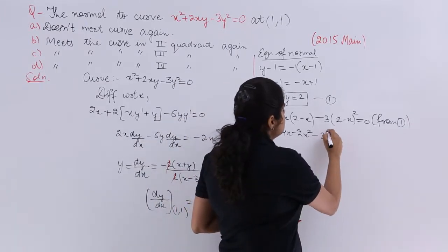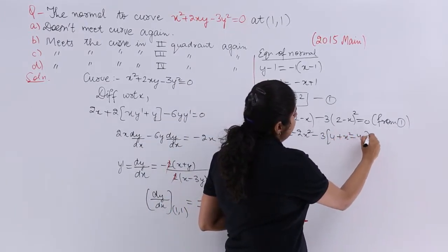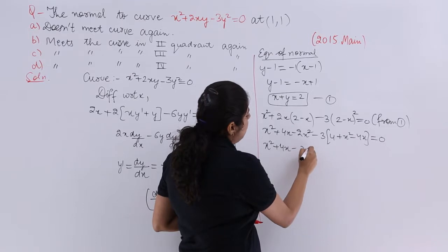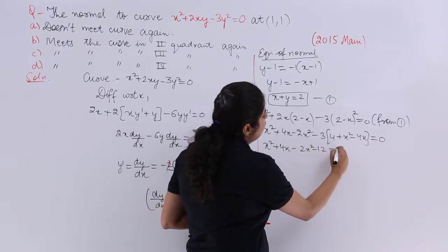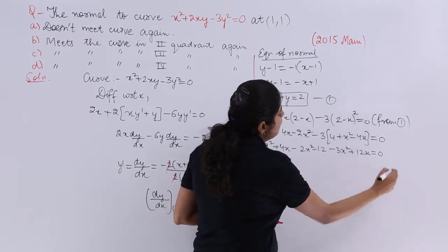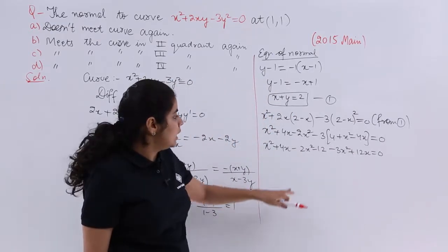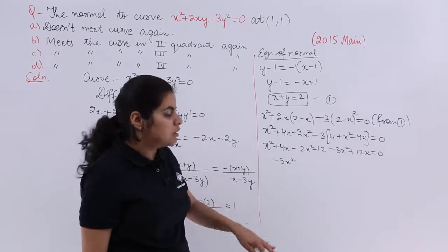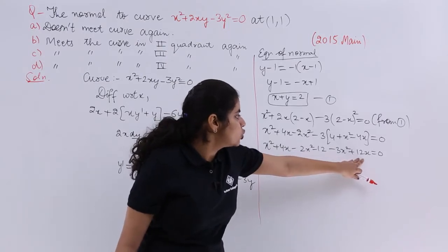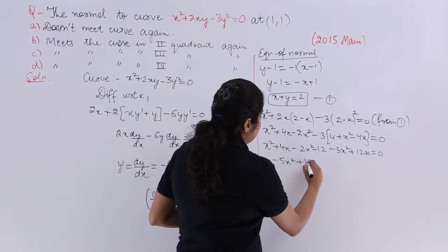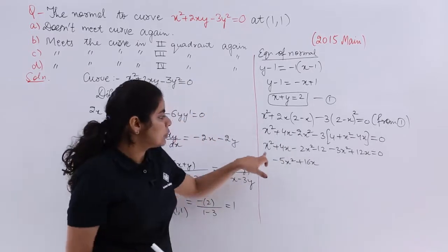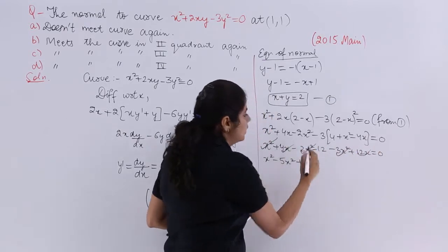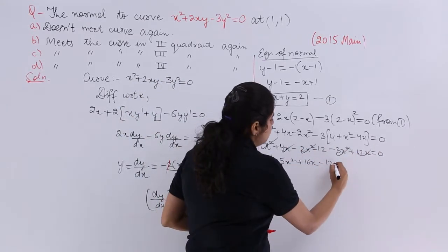Expanding: x² + 4x − 2x² − 3(4 + x² − 4x) = 0, which gives x² + 4x − 2x² − 12 − 3x² + 12x = 0. Collecting like terms: the x² terms give −4x², the x terms give 16x, and the constant is −12. So we have −4x² + 16x − 12 = 0.